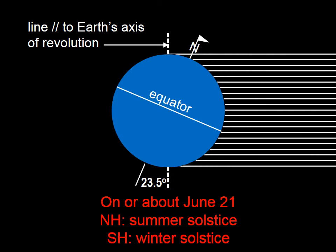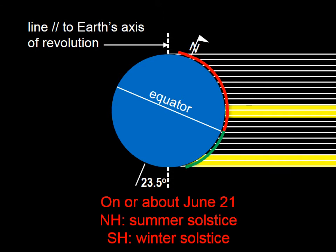Let's say we have the Sun somewhere over here on the right shining its rays on the Earth. You can see that the Northern Hemisphere gets the lion's share of the sunlight on June 21st. If we take two portions of sunlight, those two portions contain the same amount of energy — you can see how those two yellow portions are the same height. But in the Northern Hemisphere, that same amount of energy is concentrated in a smaller area. Which is why, in June, in the Northern Hemisphere, it's summer.